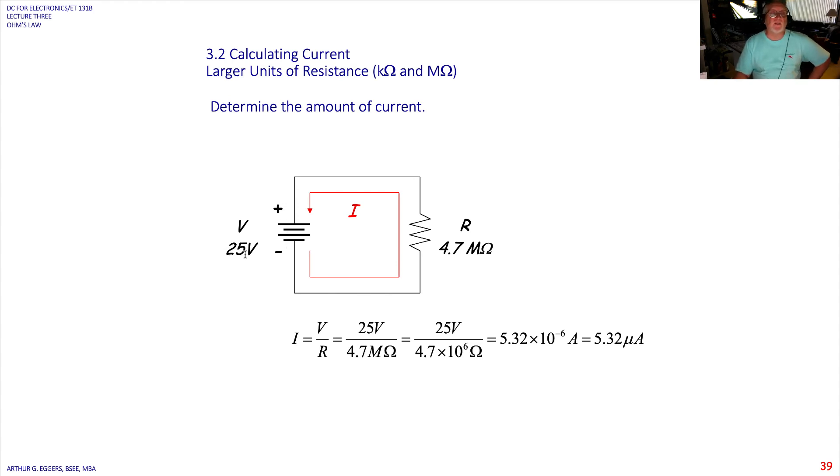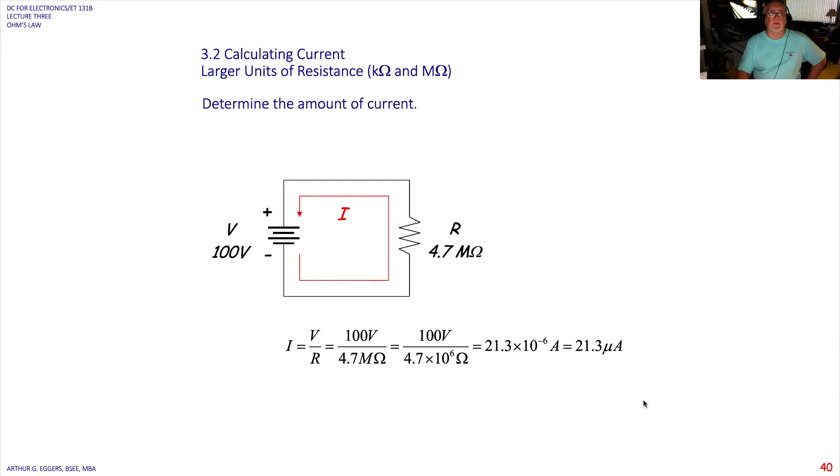Same circuit. 25 volts source, 4.7 mega ohms. So now we're going to up it by three zeros. So now we have 25 volts in the numerator, 4.7 mega ohms, or 4.7 times 10 to the sixth ohms. Move the 10 to the sixth into the numerator. It becomes 10 to the minus sixth. 4.7 divided into 25 gives us 5.32. So our current now, you can see it's getting really, really small. That's 5.32 times 10 to the minus sixth. That's six more zeros added in front of that five.